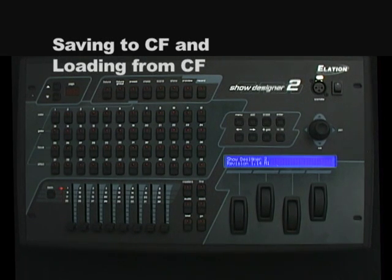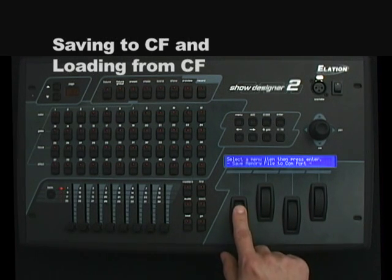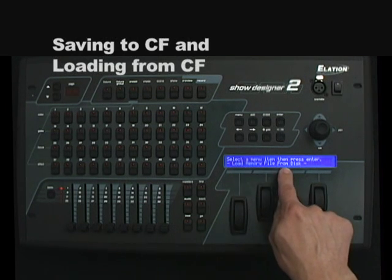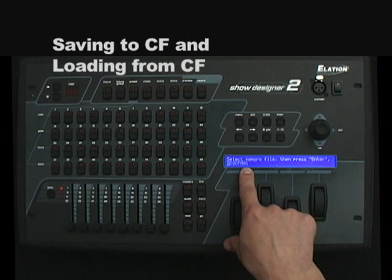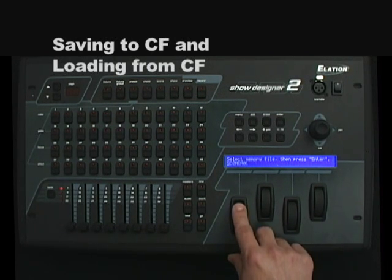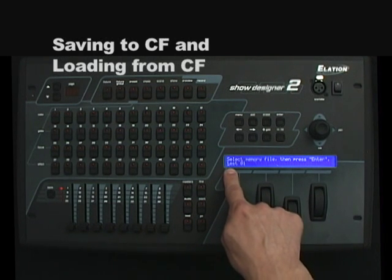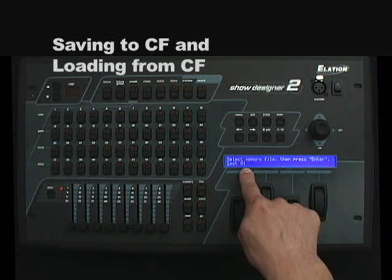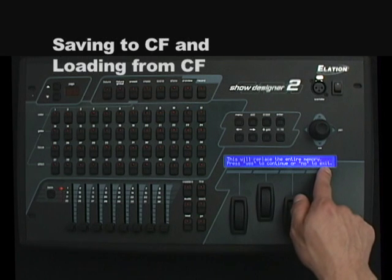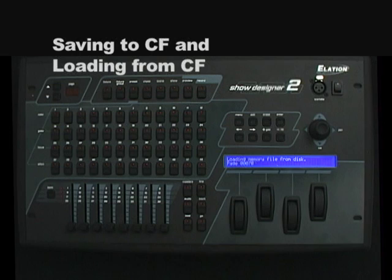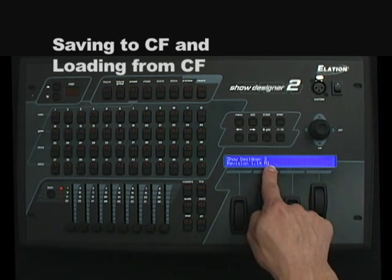To load a memory file from the compact flash port, go into the menu and use data wheel 1 to select the 'Load Memory File from Disk' option, then press enter. The files on the disk will appear on the second line of the display — use data wheel 1 to scroll through the various memory files. I'll select my file named 'Test 01' and press enter. A message will appear reading 'This will replace the entire memory — press yes to continue or no to exit.' I'll press yes to continue, and the memory file will begin to load immediately. Once the main Show Designer 2 screen comes up, the memory file will have been loaded.